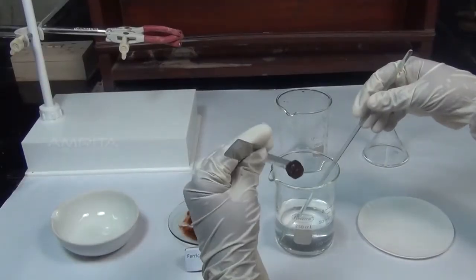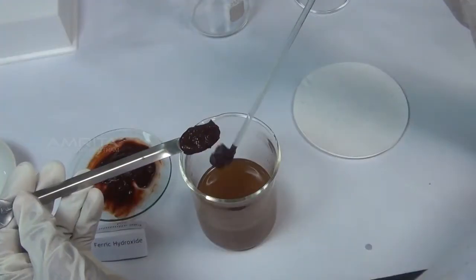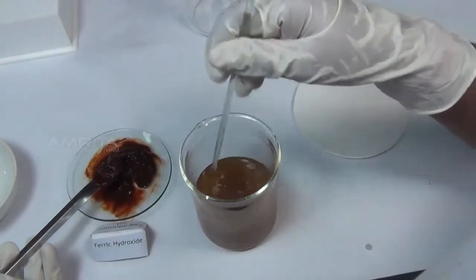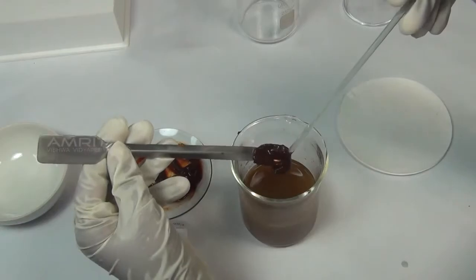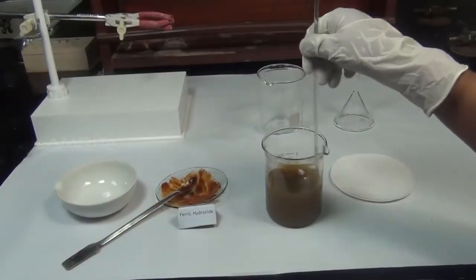Using a spatula, add freshly prepared ferric hydroxide precipitate in small proportions to the solution of potassium oxalate and oxalic acid with constant stirring to dissolve the precipitate.